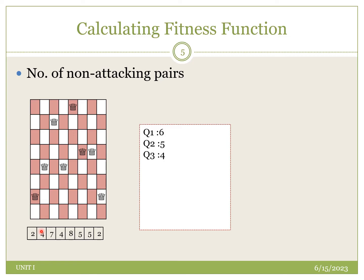For the third queen, placed in the seventh location, we check the remaining five queens. The last queen is in an attacking position diagonally, and all the rest are in non-attacking pairs, giving a count of four. For the fourth queen, placed in the fourth location, all remaining four queens are in non-attacking positions, so the value is four.